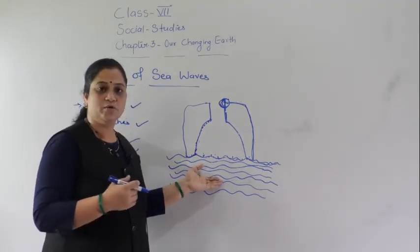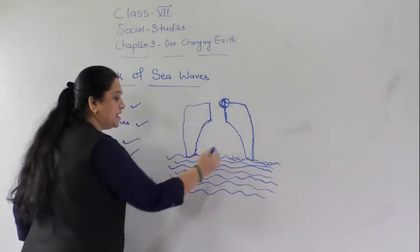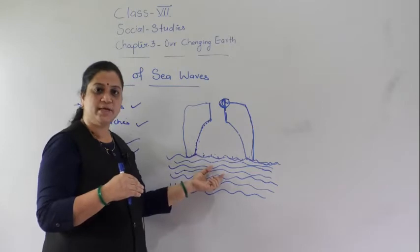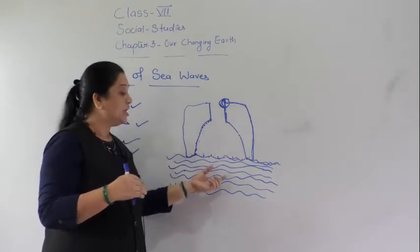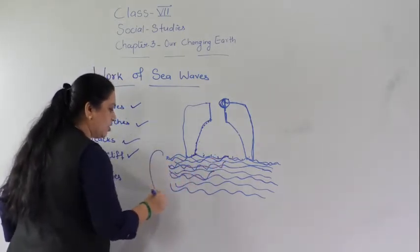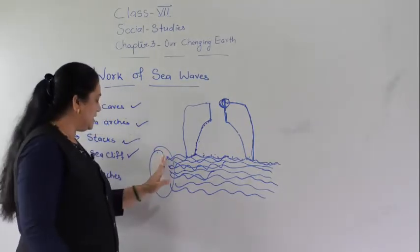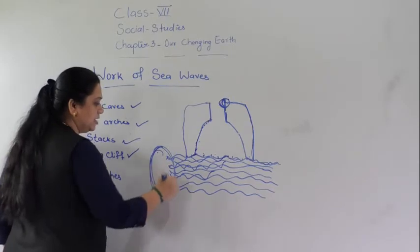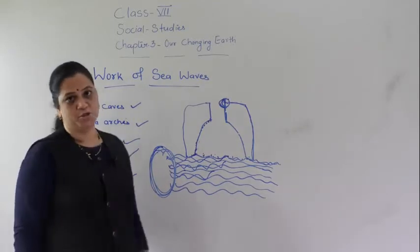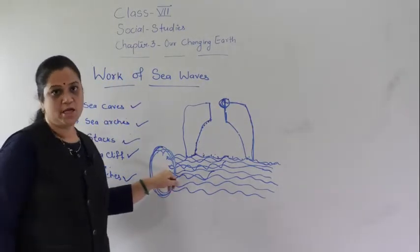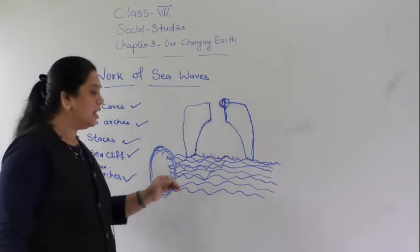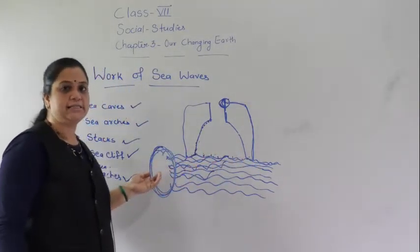Where does this eroded material go? The sea waves carry with them sand, silt, and small sediments of the eroded rocks, which get deposited in the sea. These waves bring the eroded material and deposit it on the sea shore. This way, the eroded material forms sea beaches on the shore. In short, beaches are formed by the eroded material deposited by the sea waves.